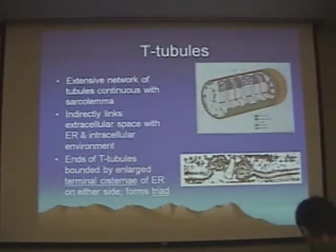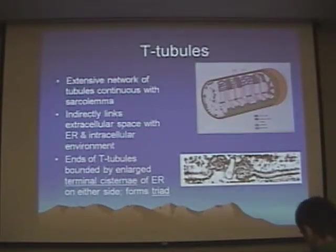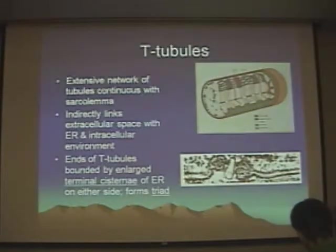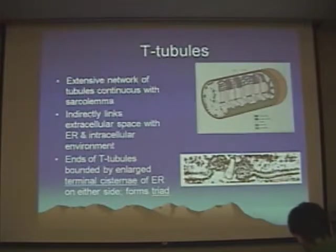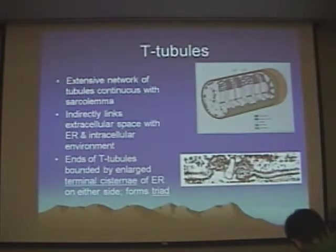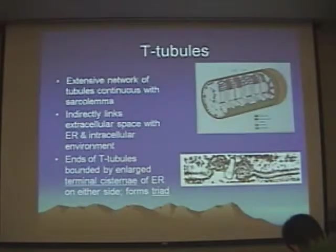T-tubules are modifications of the cell membrane within skeletal muscle, which are used to help transmit the wave of depolarization deep into the fiber. Because these are multinucleated cells, they're really large, and so the T-tubules help carry that impulse deep into the cell. You need to do that because deep inside the cell you have the endoplasmic reticulum, which is modified into terminal cisternae — calcium storage organs. As that wave of depolarization is transmitted to the terminal cisternae, that causes calcium to release into the cytoplasm, triggering sliding filament movement and resulting in muscle contraction. So without T-tubules and terminal cisternae, you wouldn't have efficient muscle contraction.